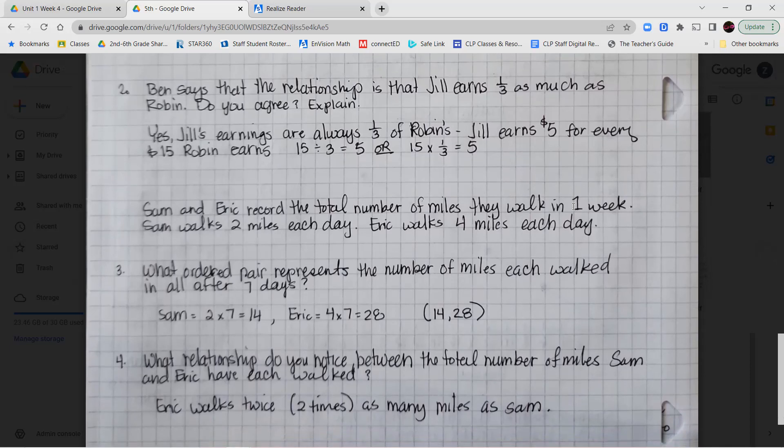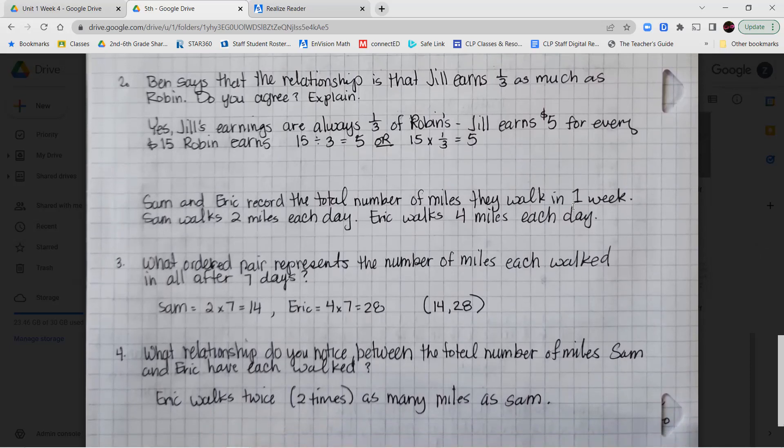For number two, Ben says that the relationship is that Jill earns one-third as much as Robin. Do you agree? Explain. So yes, Jill's earnings are always one-third of Robin's. So Jill earns $5 for every $15 that Robin earns and 15 divided by 3 is 5. Or you can say 15 times one-third is equal to 5.